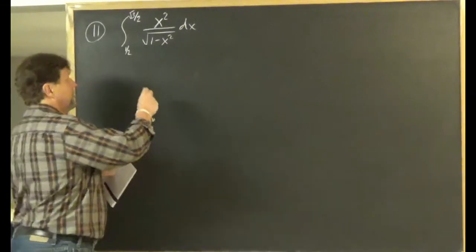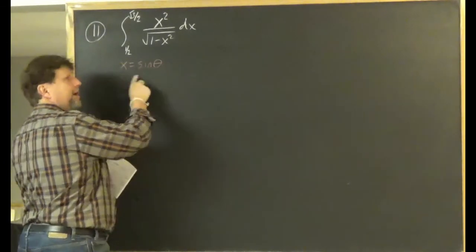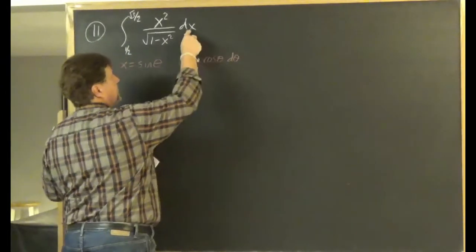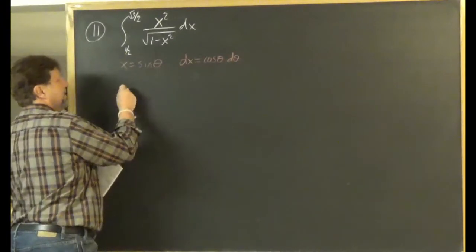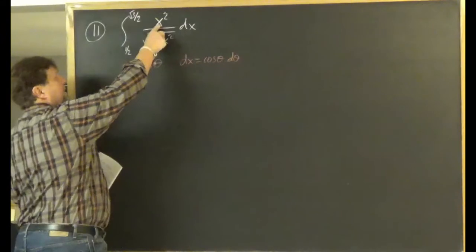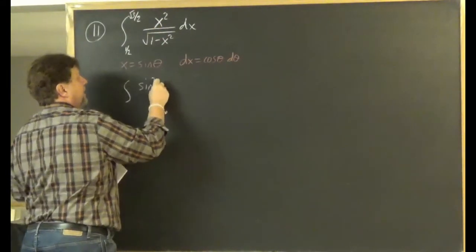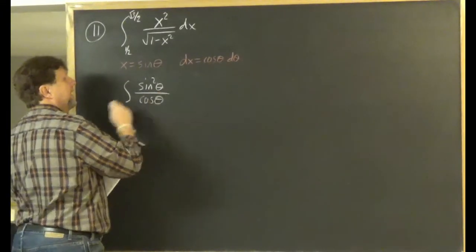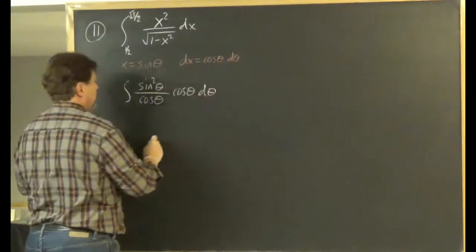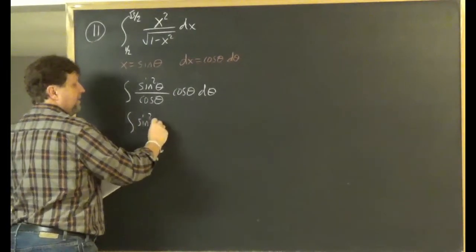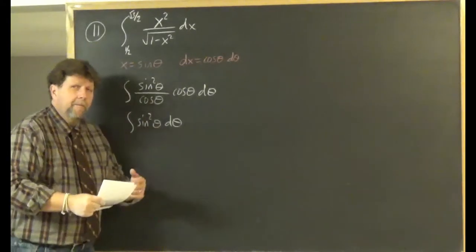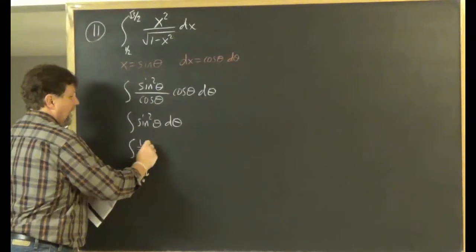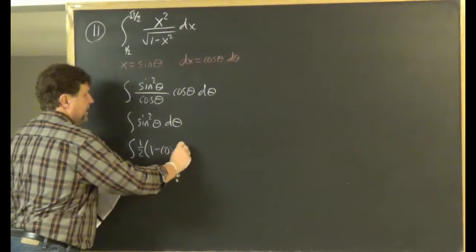For number 11, you're asked to evaluate the definite integral from 1/2 to √3/2 of x²/√(1 − x²) dx. The trigonometric substitution is x = sinθ, so dx = cosθ dθ. Substituting in: x² becomes sin²θ, the radical simplifies to cosθ, and dx is cosθ dθ. The cosθ's cancel, leaving ∫sin²θ dθ — a trigonometric integral. We attack this using the power-reducing identity: sin²θ = (1/2)(1 − cos2θ).